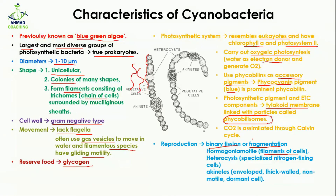They have hormogonia, which are filaments of cells — you can see the hormogonia here. They also have heterocysts, which are specialized nitrogen-fixing cells — you can see this part here where the heterocysts are located. Additionally, they have akinetes, which are thick-walled, non-motile, dormant cells enveloped by a surrounding layer, as you can see here.